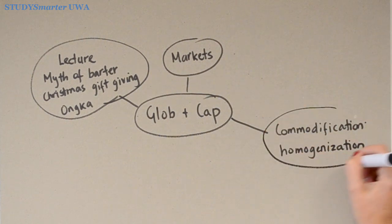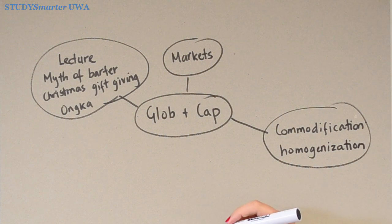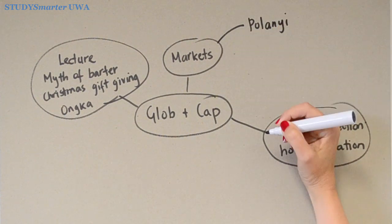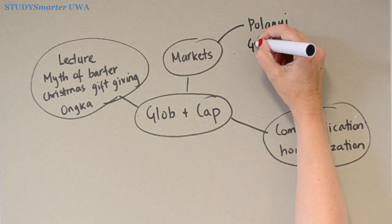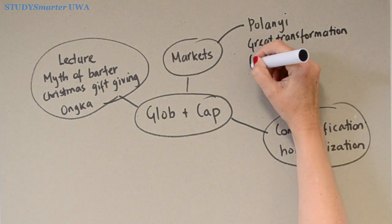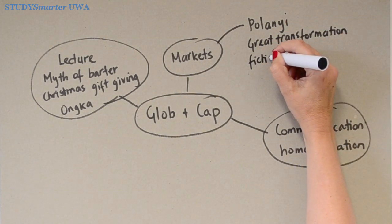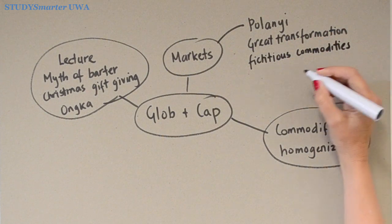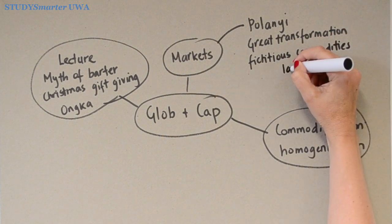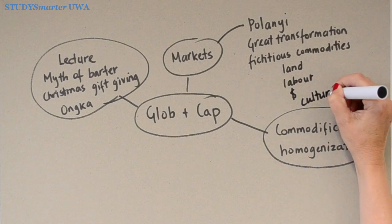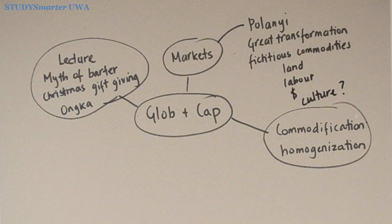Who is that guy mentioned in the lecture and some of the readings? Polanyi and his idea of the great transformation — I really like that. Fictitious commodities: land, labor, money — things that were originally produced not for profit but which have become commodities. I wonder if we can start to think of culture as another thing not produced for profit but now so often commodified, and it might be relevant to what I'm doing here.